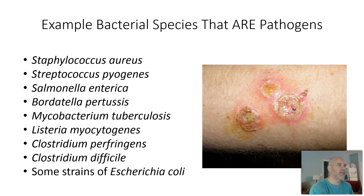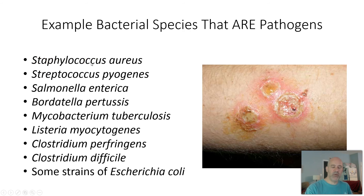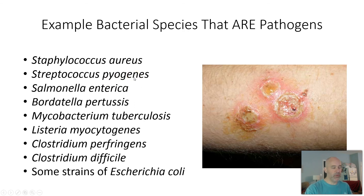Most bacteria do not make us sick, but what are some example bacterial species that are pathogens? There's a whole bunch of them. Staphylococcus aureus — when you hear about a staph infection, Staphylococcus is a genus of bacteria. There are a number of different species in that genus; many of them are generally harmless. Your skin is covered with Staphylococcus bacteria. But Staphylococcus aureus is capable of causing a number of different types of infections. Streptococcus is another genus with some pathogenic members. Streptococcus pyogenes causes strep throat; it's also responsible for scarlet fever, rheumatic fever, and some strains cause flesh-eating disease. Also, toxic shock syndrome is generally caused by Streptococcus pyogenes.